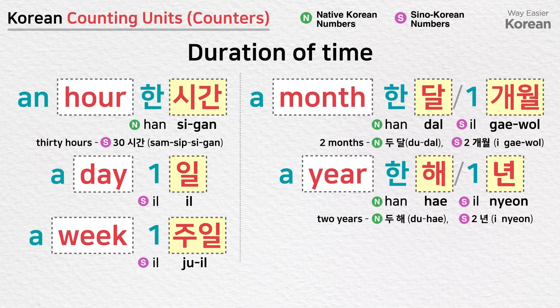Duration of time continued: 1시간 (an hour), 30시간 (30 hours), 1일 (a day), 1주일 (a week), 1달 / 1개월 (a month), 2달 / 2개월 (2 months), 1년 (a year), 2년 (2 years).